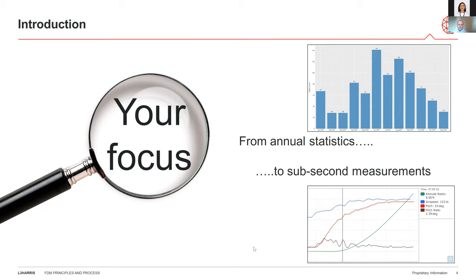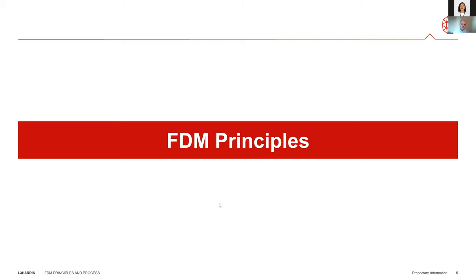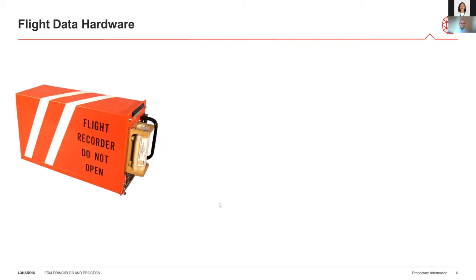Flight data monitoring can have variable focus. You can look at annual statistics or focus right down to sub-second momentary occurrences. All of the time, we have to be careful that we don't add our own interpretation — the data speaks for itself. We can add extra things into the data like air safety reports, but the data must speak for itself. So now let's go back to the principles of flight data monitoring and look at some of the hardware.